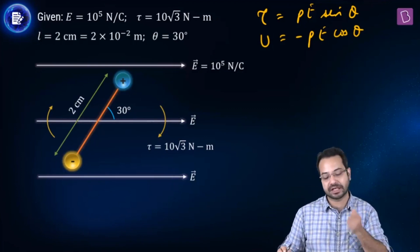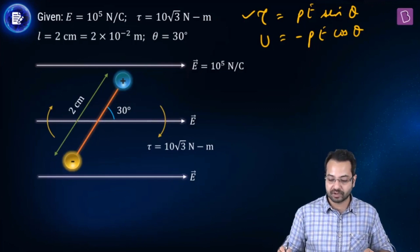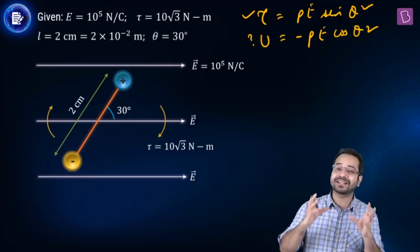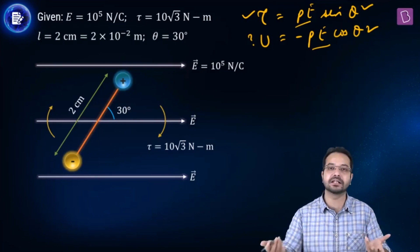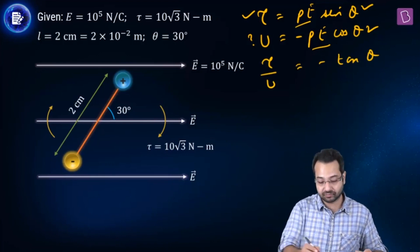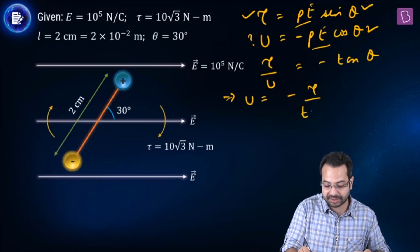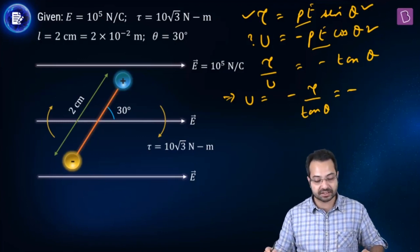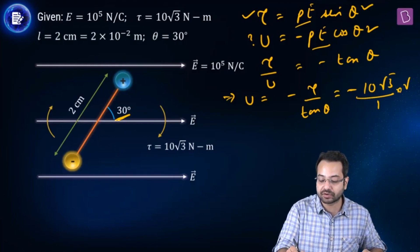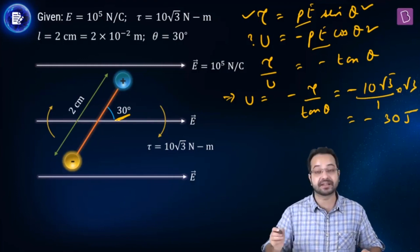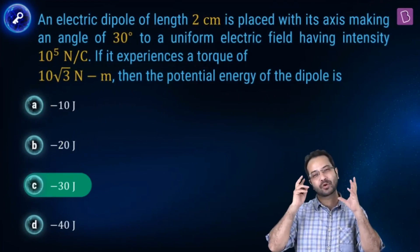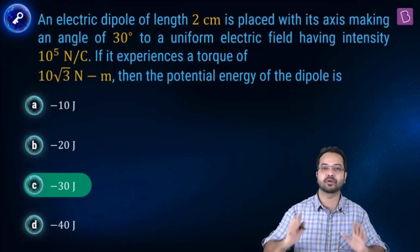The magnitude of torque is τ = PE·sinθ and potential energy is U = −PE·cosθ. We have τ and θ given. Dividing the equations: τ/U = −tanθ, so U = −τ/tanθ. Substituting: U = −10√3 / tan30°. tan30° = 1/√3, so U = −10√3 × √3 = −30 J. Option C is the right answer. Sometimes you get extra data just to confuse you, but with the right concepts you can avoid that.